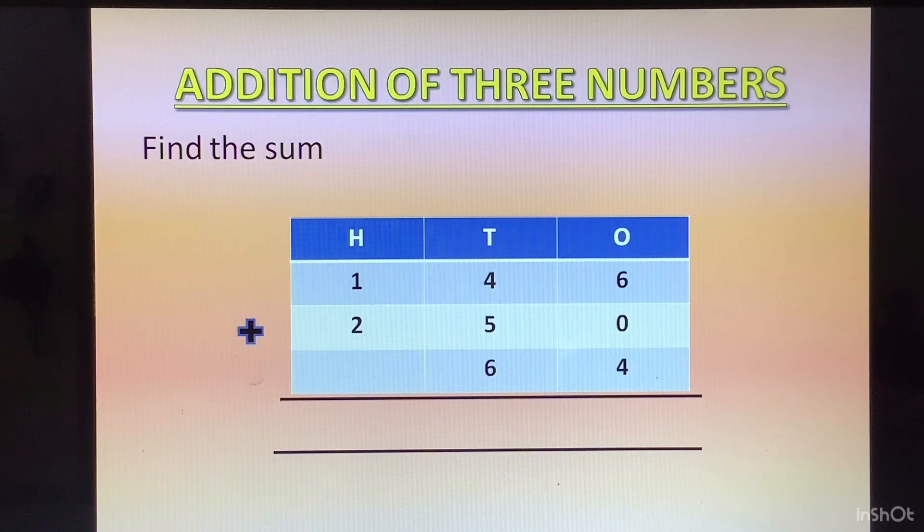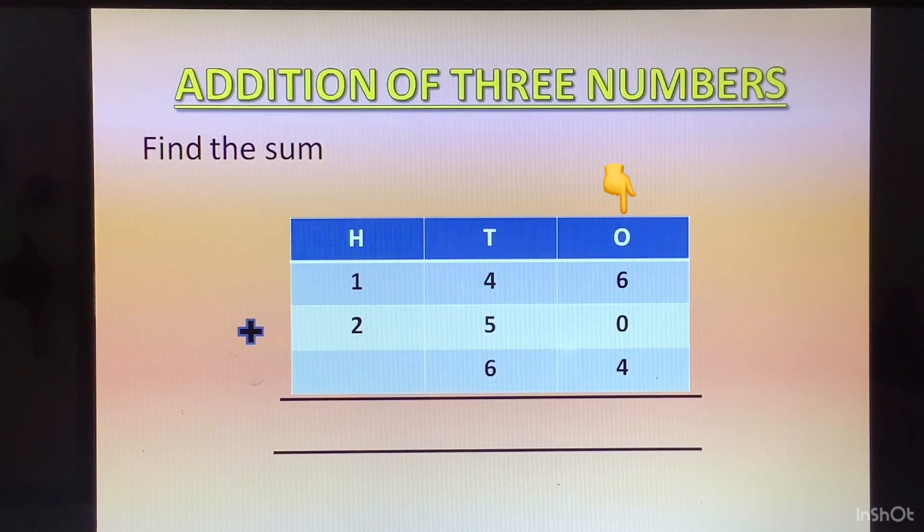So when we are adding we will start from the 1's column. We will add 6 plus 0 which is 6. Then to this 6 we will add 4, which makes it 6 plus 4, 10. 1 at the top of 10's column and 0 at the bottom of 1's column.